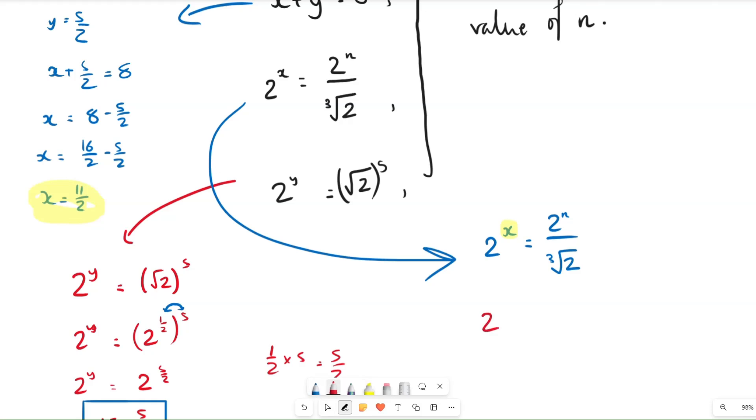So we're going to get 2 to the power of 11 over 2 equals 2 to the power of n over, and let's do this in one step. How are we going to rewrite the cube root of 2? So we saw how if we've got a square root of 2, that's equal to 2 to the power of a half.